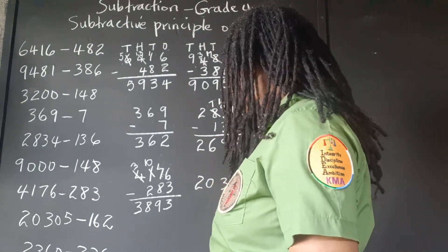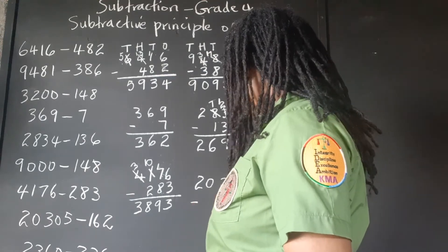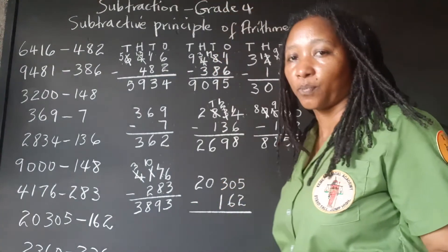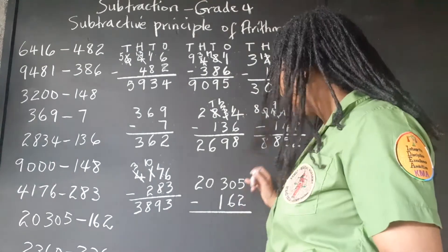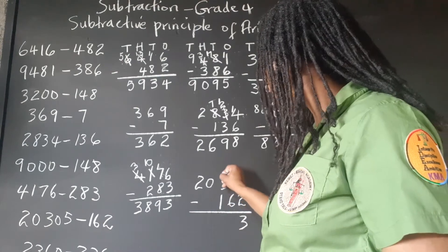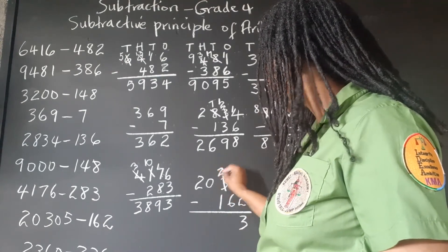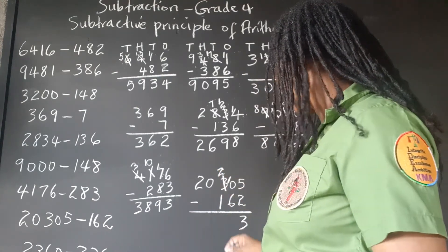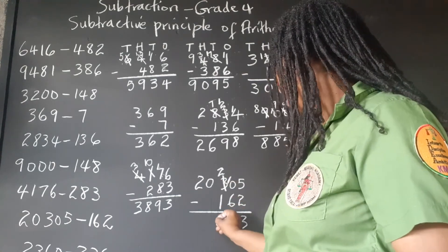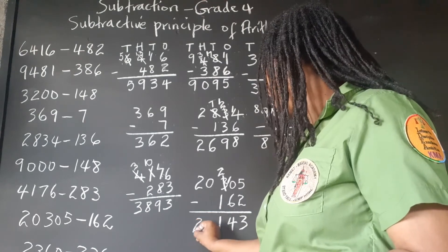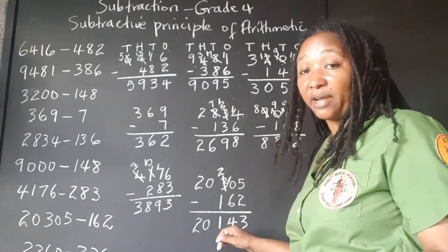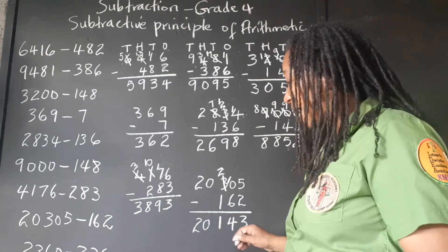20,305 take away 162. 5 take away 2 is 3. We can't take 6 from 0, so take 1 out of the 100, carry it as 1 group of 10. 10 take away 6 is 4. 2 take away 1 is 1. Bring down the 20. Answer: 20,143.